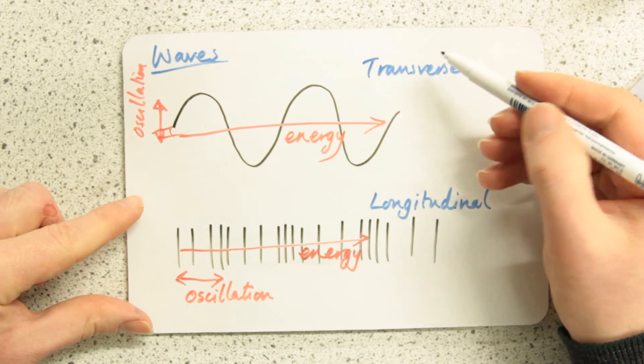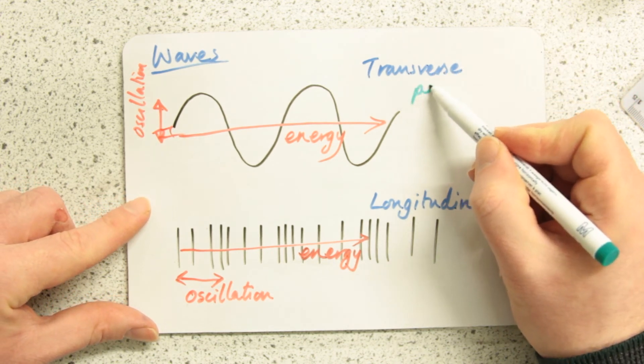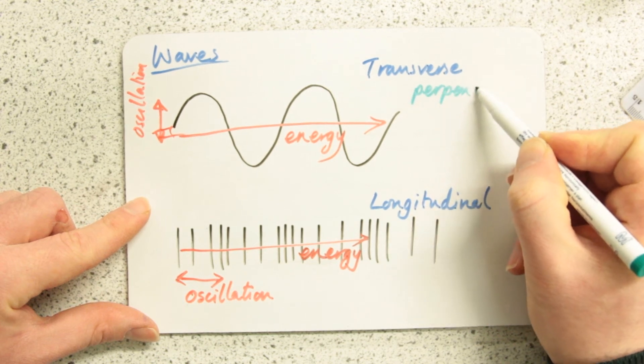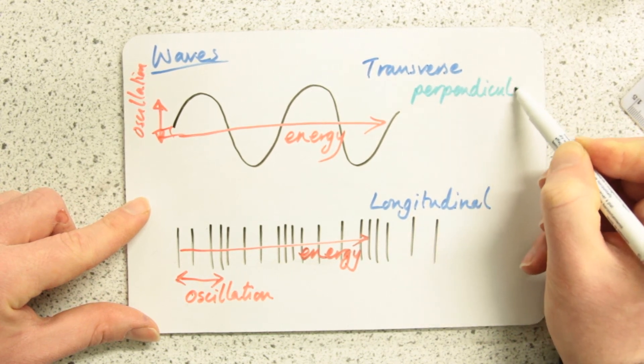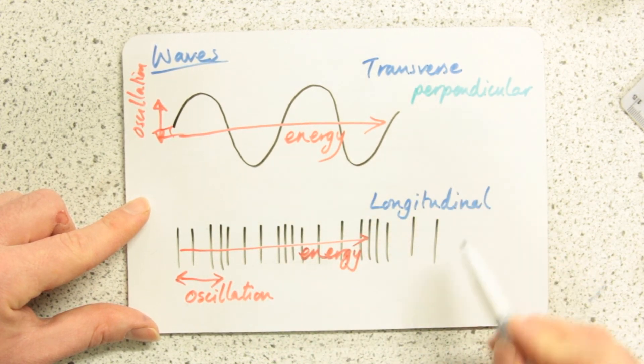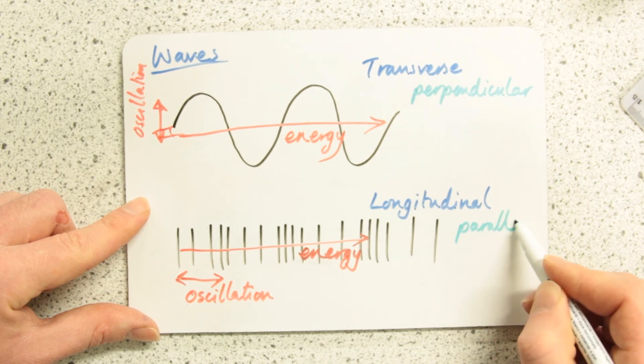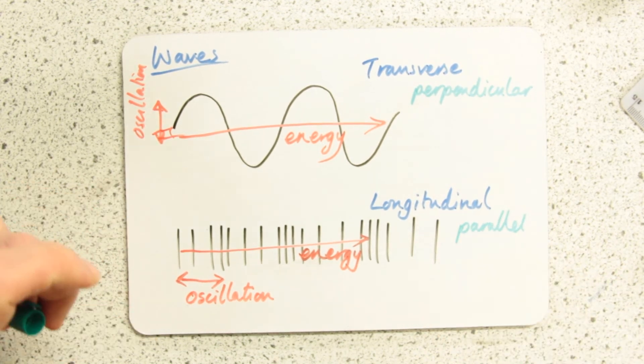In the transverse wave, the vibration or the oscillation is perpendicular to the direction of energy transfer. In a longitudinal wave, it is parallel to the direction of energy transfer.